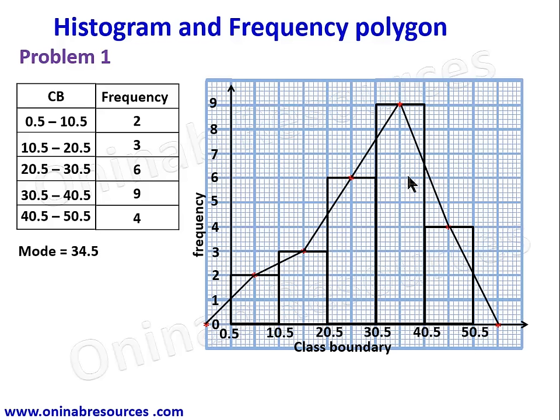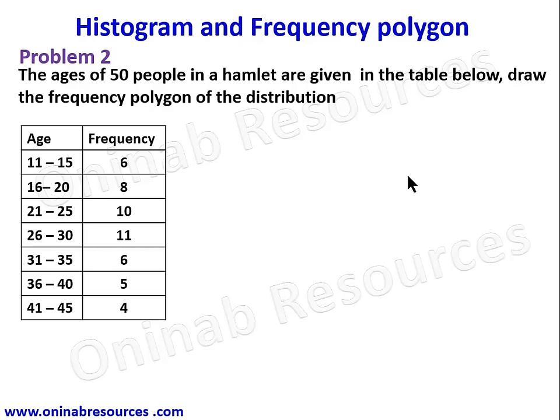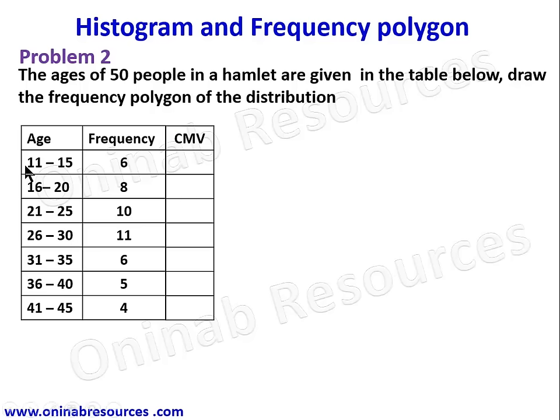Moving to problem two: the ages of 50 people in a hamlet are given in the table. We need to draw only the frequency polygon of the distribution. The frequency polygon uses the class mid value on the horizontal axis and the frequency on the vertical axis, so we create an additional column for the class mid value by adding the lower and upper class interval limits and dividing by two.